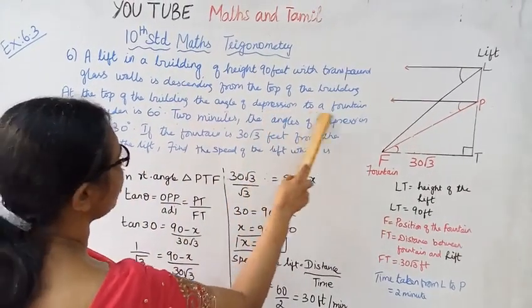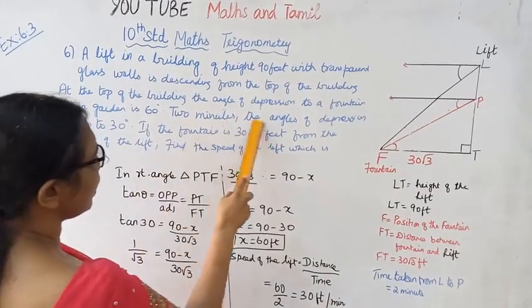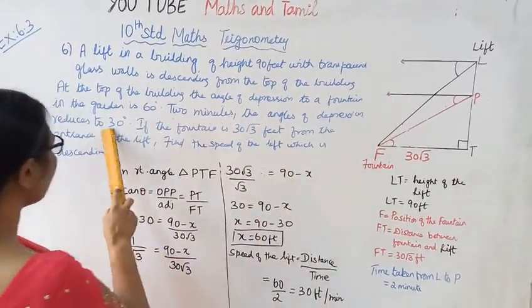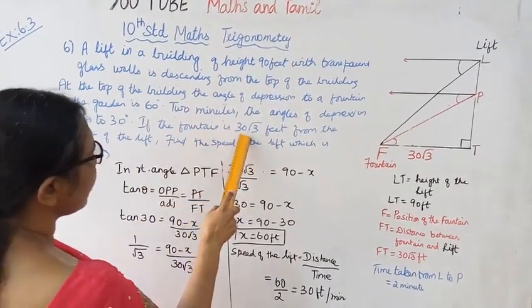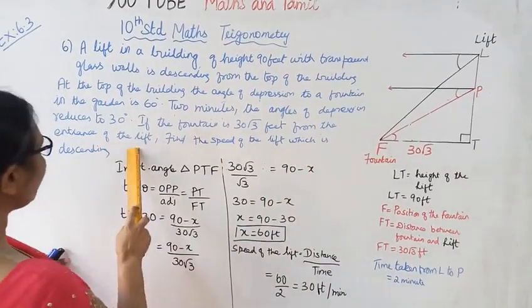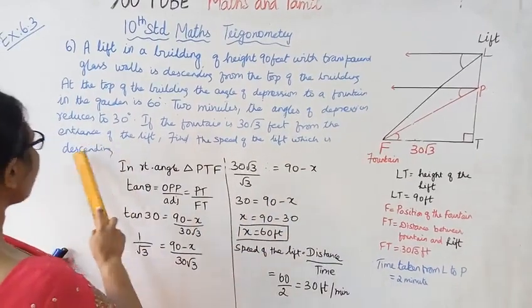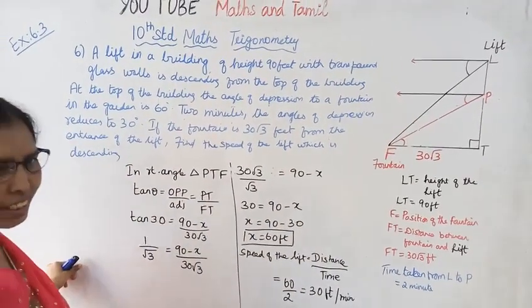the angle of depression to a fountain in the garden is 60 degrees. Two minutes later, the angle of depression reduces to 30 degrees. If the fountain is 30 root 3 feet from the entrance of the lift, find the speed of the lift which is descending.